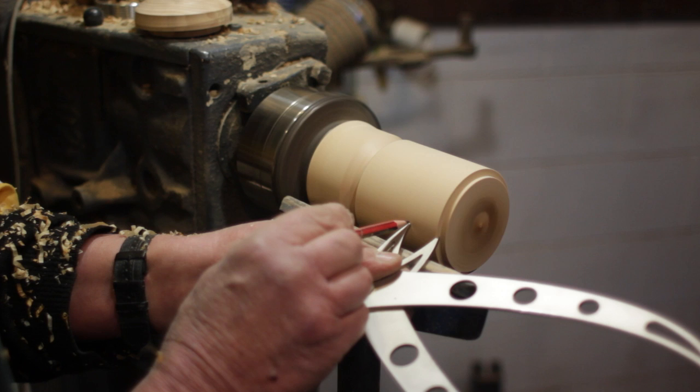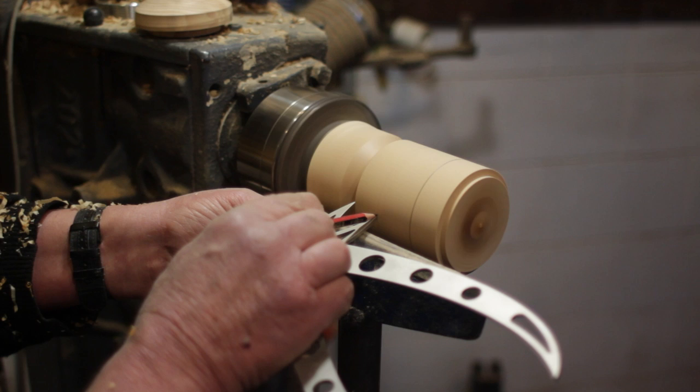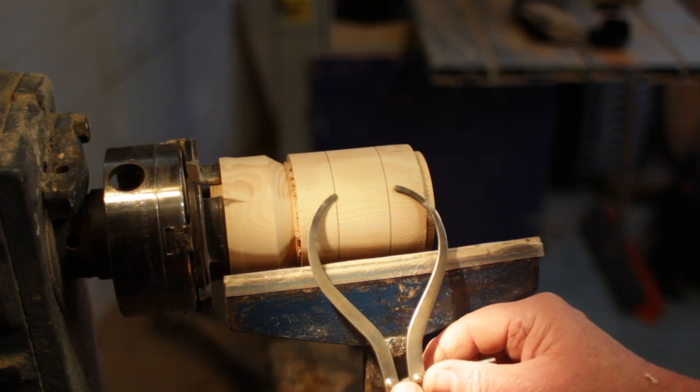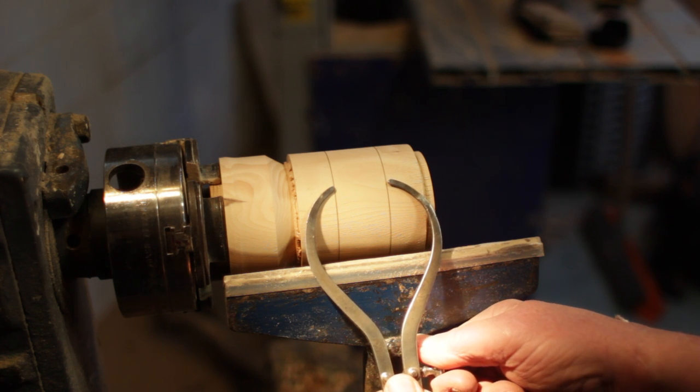Now with the beak of the caliper we measure in from the two ends and mark with a black pencil. Now set a spring caliper to the distance between the two black lines.